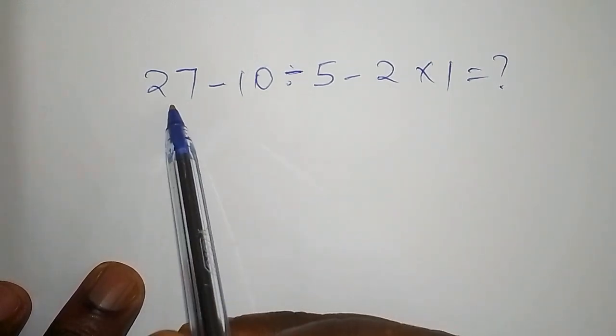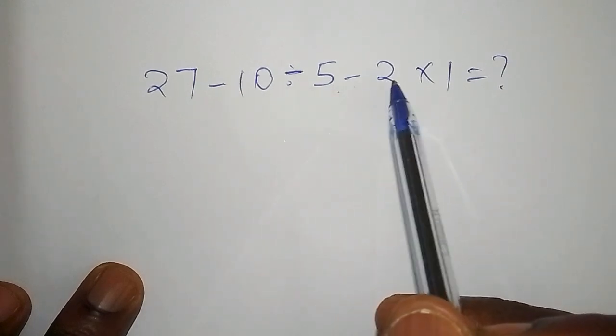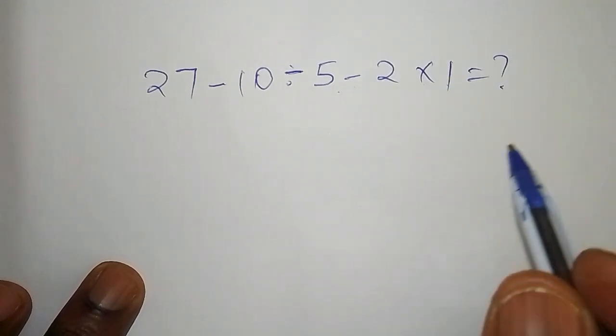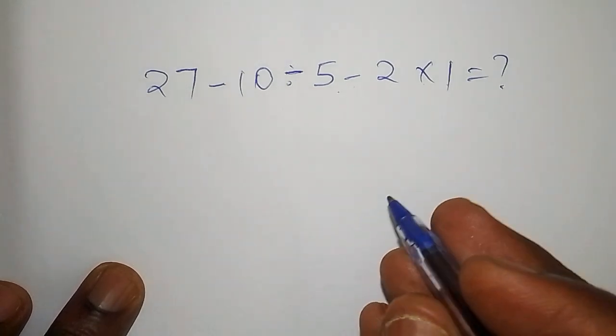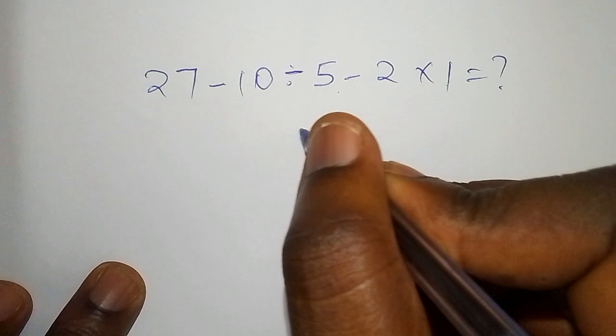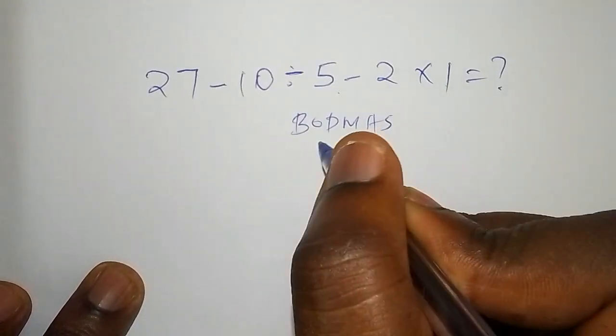So we have 27 - 10 ÷ 5 - 2 × 1. For us to work out this math problem in an effective way, the first step that you're going to do is you're going to bring what is called the BODMAS. The BODMAS will guide us on what to do to this math problem.